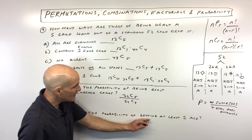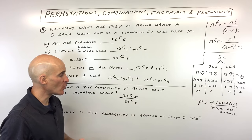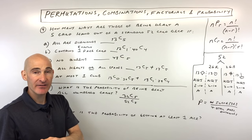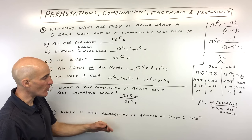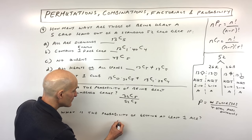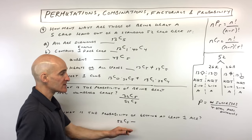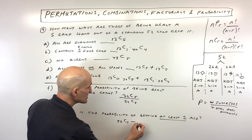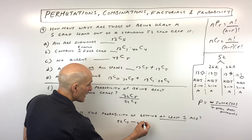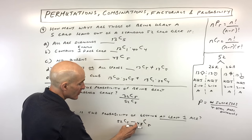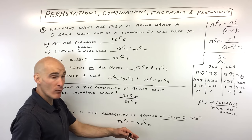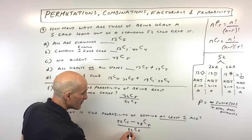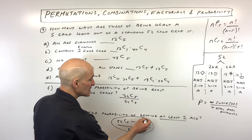For the probability of getting at least one ace: you could have one, two, three, or four aces. Instead of calculating each, use total minus none. Total five-card hands: 52C5. Five-card hands with no aces: 48C5 (since there are only four aces, leaving 48 non-ace cards). So the numerator is 52C5 minus 48C5 — all hands with at least one ace. Divide by 52C5 for the probability.